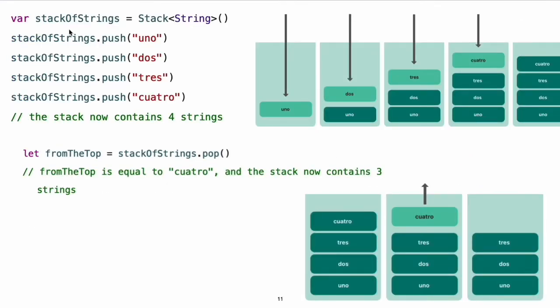You create a new stack instance by writing the type to be stored in the stack within angle brackets. For example, to create a new stack of strings, you write stack string. Here's how a stack of strings looks after pushing four values onto the stack. Popping a value from the stack removes and returns the top value. Here's how the stack looks after popping its top value.